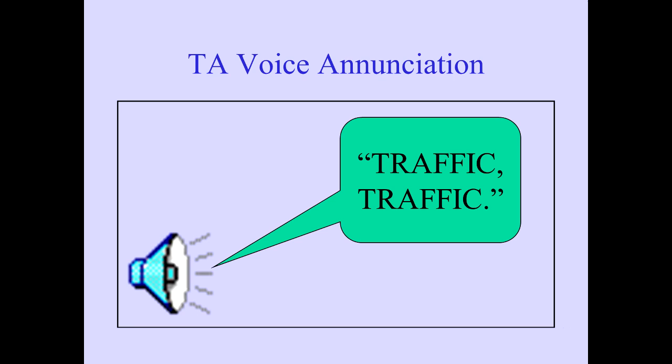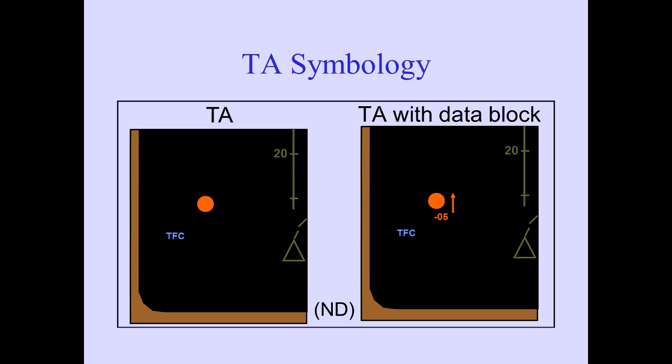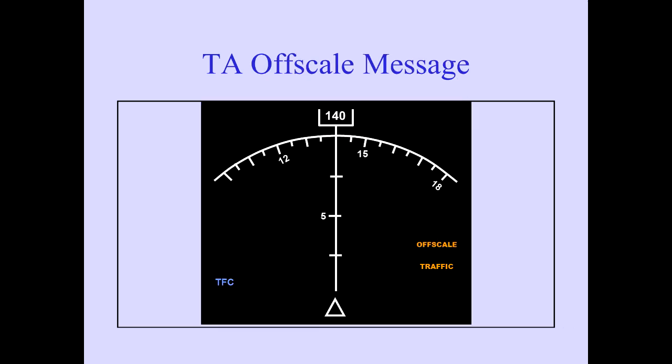The voice enunciation 'Traffic, traffic' sounds when TCAS issues a traffic advisory. It is intended to direct your attention to the traffic situation. It is not repeated. The TA symbol is also displayed on the ND. If the intruder aircraft is providing transponder altitude information, the data tag is displayed with the symbol. If the intruder is beyond the range setting of the ND, the traffic and off-scale messages are displayed. The color depends on the type of advisory: RAs are red, TAs are amber.